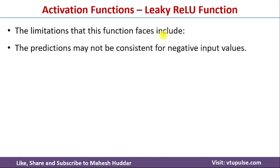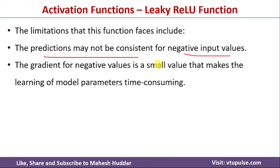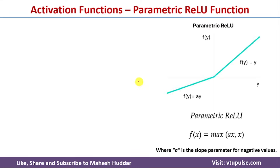The limitations of Leaky ReLU are that predictions may not be consistent for negative input values because of the small positive slope. Also, unlike ReLU where some neurons are inactive making it computationally efficient, in Leaky ReLU all neurons are active on both the positive and negative sides, so it will take more time compared to ReLU — that is why it is called computationally inefficient compared to ReLU.